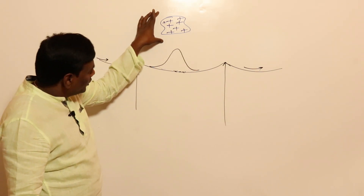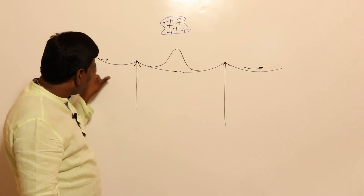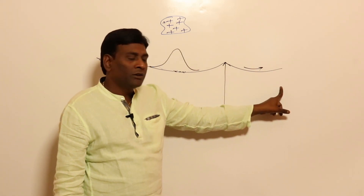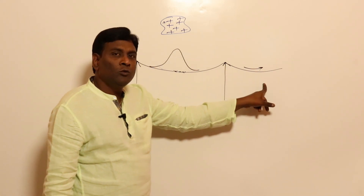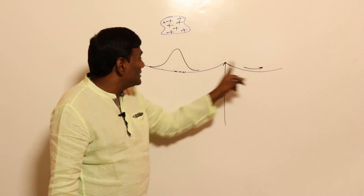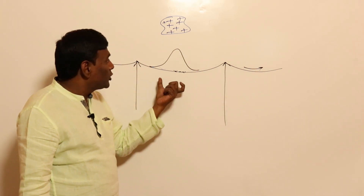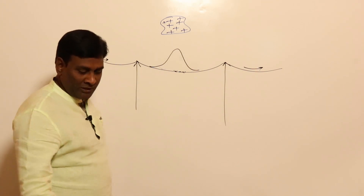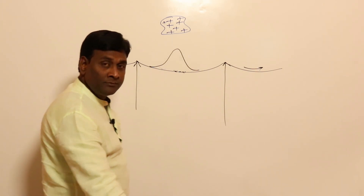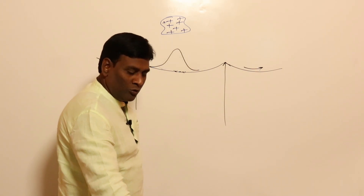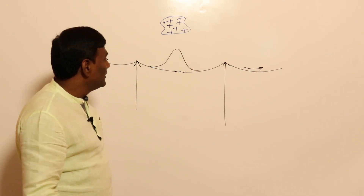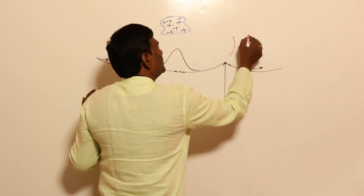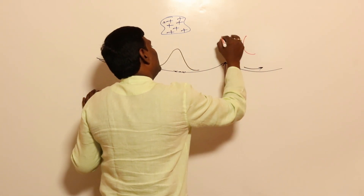Under steady-state conditions, currents will come and go, but compared to previous conditions, some additional electrons will be accumulated on the transmission line due to the strong attraction force from the cloud above. Now, for example, a nearby tree is also present.